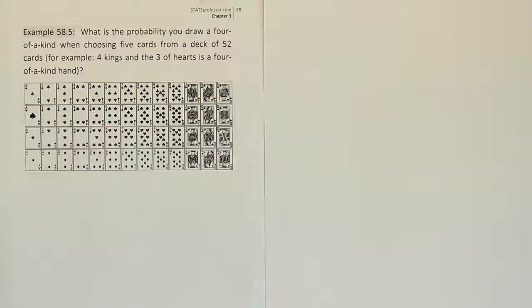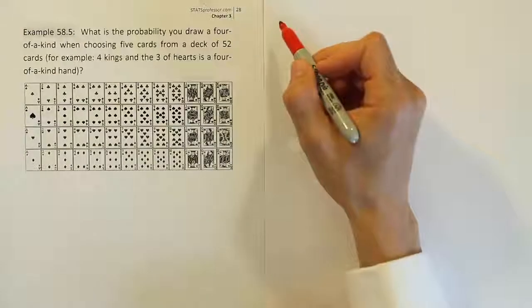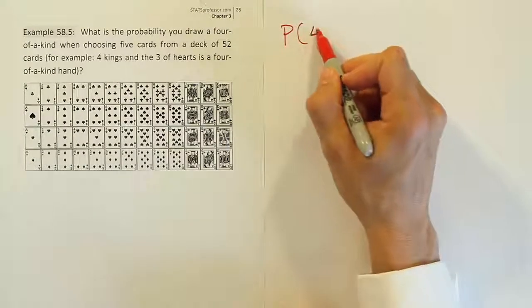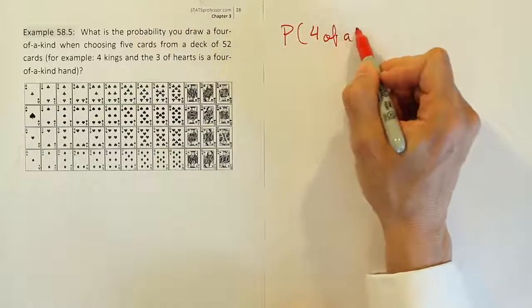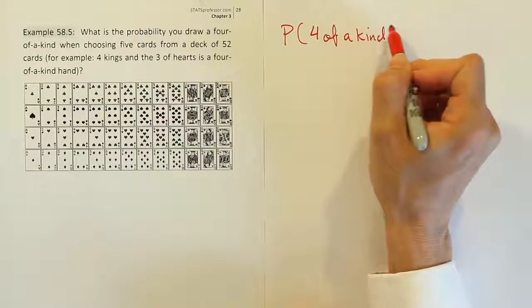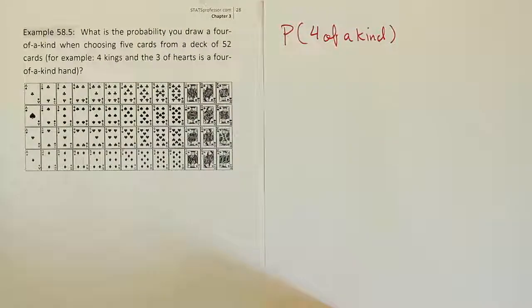Alright, so this problem is a probability problem, but it's not a simple one. So let's try to look at it and see how to figure it out. So we're looking for the probability of a four of a kind hand. This is quite difficult to do.